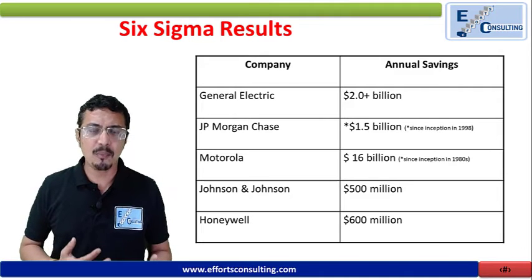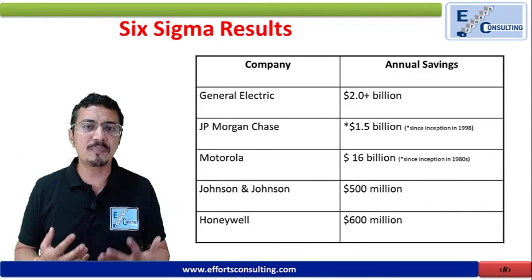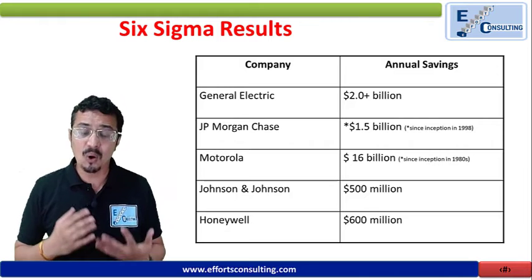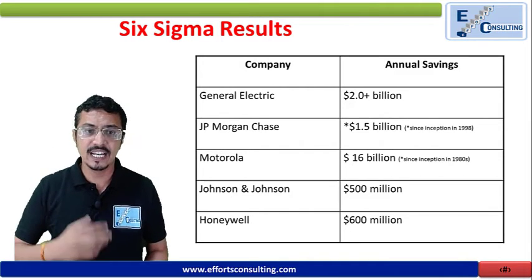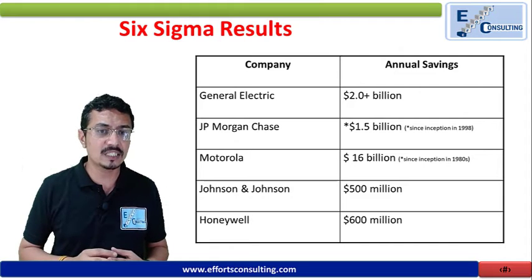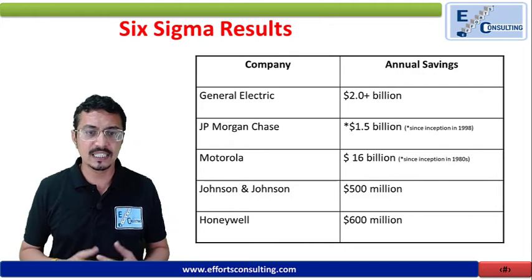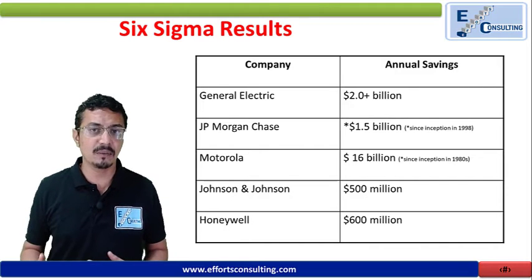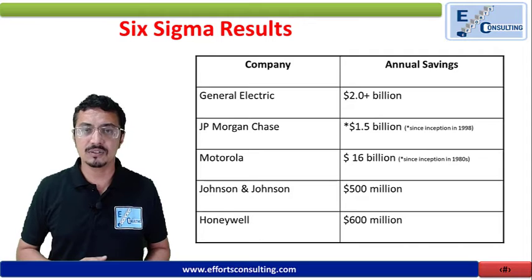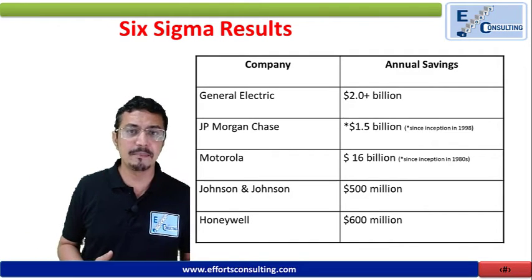Let us try to understand what companies could able to achieve by applying Six Sigma. These concepts are applicable everywhere. To support this, here are some quantitative parameters that give you an idea of the savings these companies have made. General Electric saved around 2 billion. JP Morgan could able to save 1.5 billion annually. Motorola saved 16 billion, Johnson & Johnson 500 million US dollars, and Honeywell 600 million US dollars. These are the benefits of Six Sigma these companies could able to achieve.